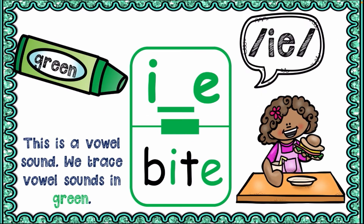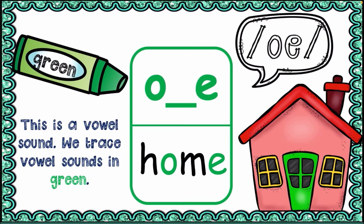The vowel digraph I-E, which is I and E, came together to form the long /aɪ/ sound as in 'bite' or 'kite'. Now we have the long /oʊ/ sound as in 'home' or 'toe'.